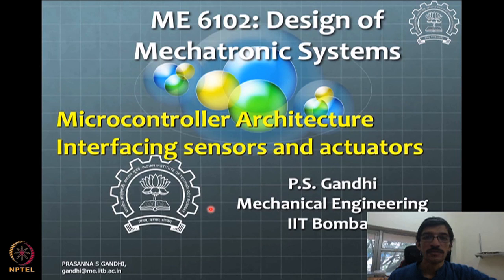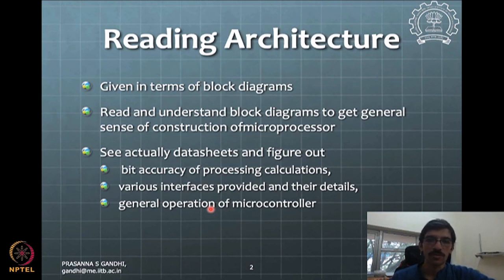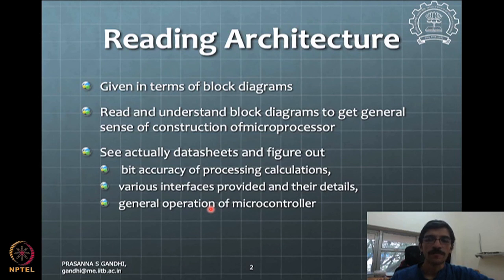For a microcontroller you need to have the skill to look at the microcontroller architecture and understand some of its details. There can be different levels of architecture. Typically a lot of information is given in terms of what the microcontroller can and cannot do, presented as block diagrams or architectural descriptions. We should have the ability to read these block diagrams and figure out what they mean for us. We will look at data sheets of microcontrollers and figure things out as we go along.